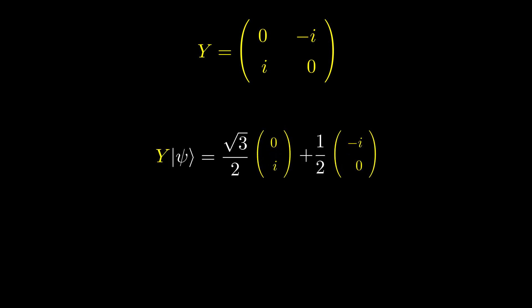Then we can factor out the i and the negative i. The column vectors once again become the 0 and 1 states, leaving us with this state.